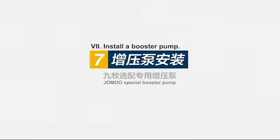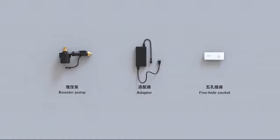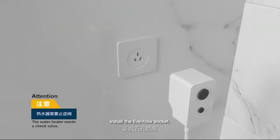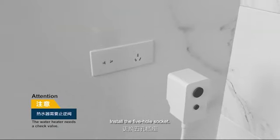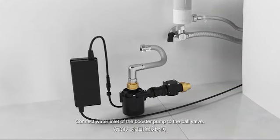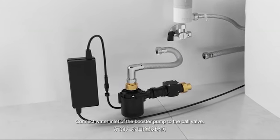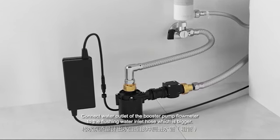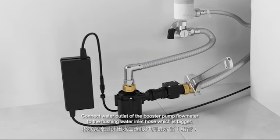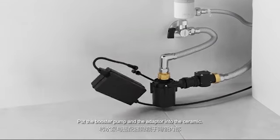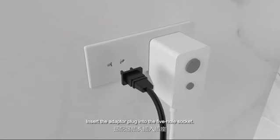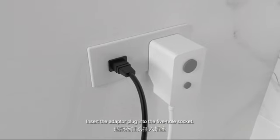Seven: install a booster pump. Cut off the power source and the water source. Install the five-hole socket. Connect water inlet of the booster pump to the ball valve. Connect water outlet of the booster pump flow meter to the flushing water inlet hose, which is bigger. Put the booster pump adapter into the ceramic. Insert the adapter plug into the five-hole socket.